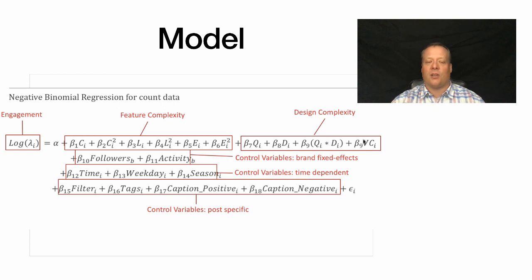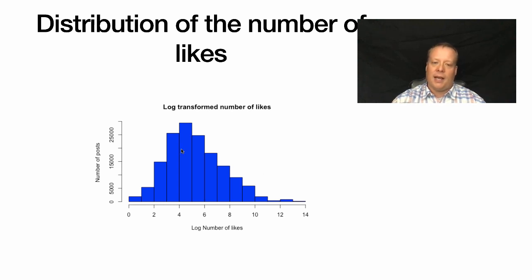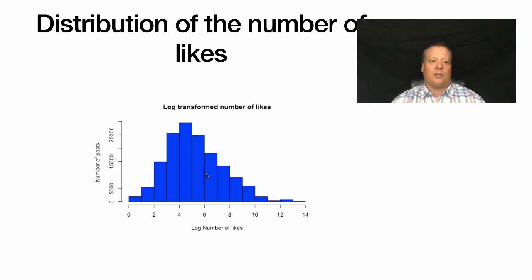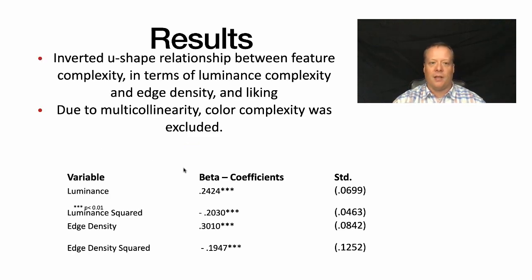The log-transformed distribution of the number of likes has an almost normal distribution — slightly skewed — which is useful for regression modeling.